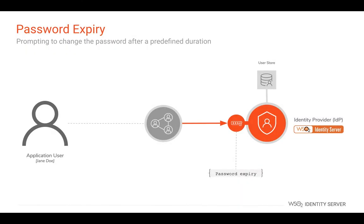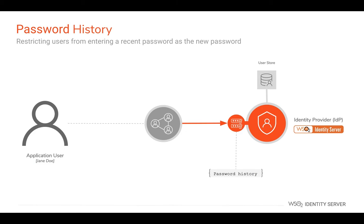In order to reduce passwords being compromised, you can enforce password expiry after a predetermined period. If you try logging into an account with an expired password, you will be granted access only after changing your password. WSO2 Identity Server also enables restricting users from re-entering recently used passwords as a new password. When a user attempts to change the password, the system will restrict them from entering the most recently used passwords.